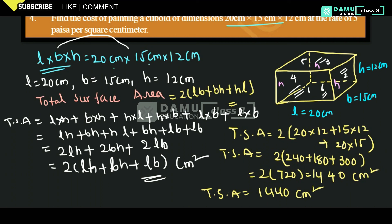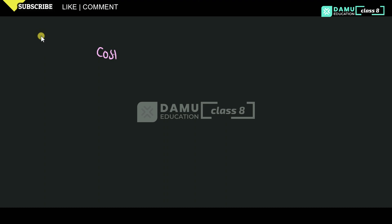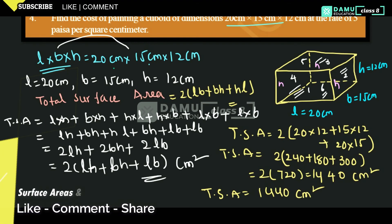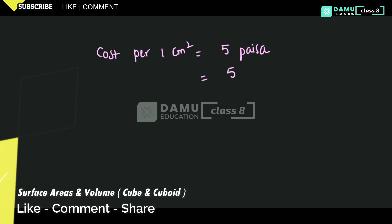So our next step is to find the cost. The cost rate is 5 paisa per square centimeter. Cost per 1 square centimeter will be 5 paisa. Now we convert: 5 paisa means 1 paisa equals 1 by 100 rupees, so 5 paisa equals 5 by 100 rupees.